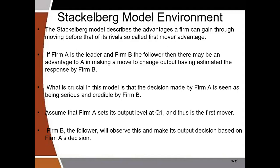The Stackelberg model describes advantages that a firm can get as a result of moving first into a certain market — it basically talks about the first mover advantage of the firm that first enters the market. Usually one firm is the leader and the other is the follower. What is very important in this model is that the decision made by the leader should be taken very seriously by the follower, because after the leader sets his output, the follower can observe it and also set his own.